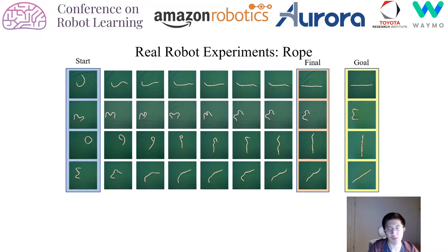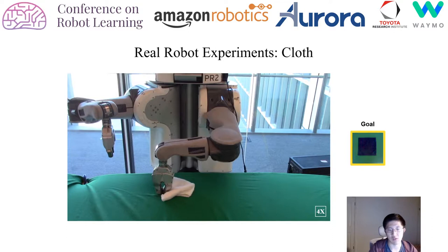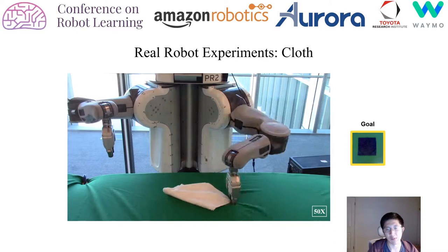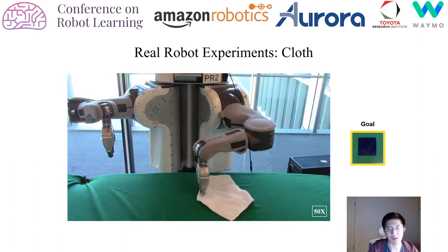Next, we have an example of an actual cloth trajectory. The video is significantly sped up for the sake of time — in practice, this takes about 20 to 30 minutes of real-world time. We found that the actual speed is limited by the robot itself rather than our algorithm.